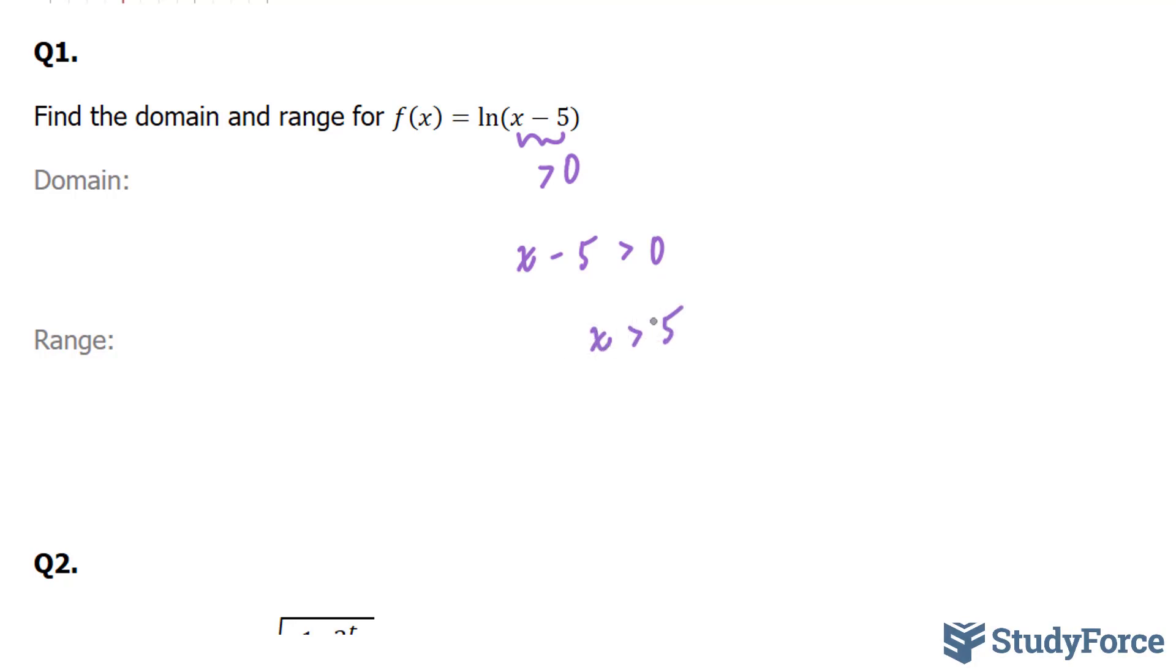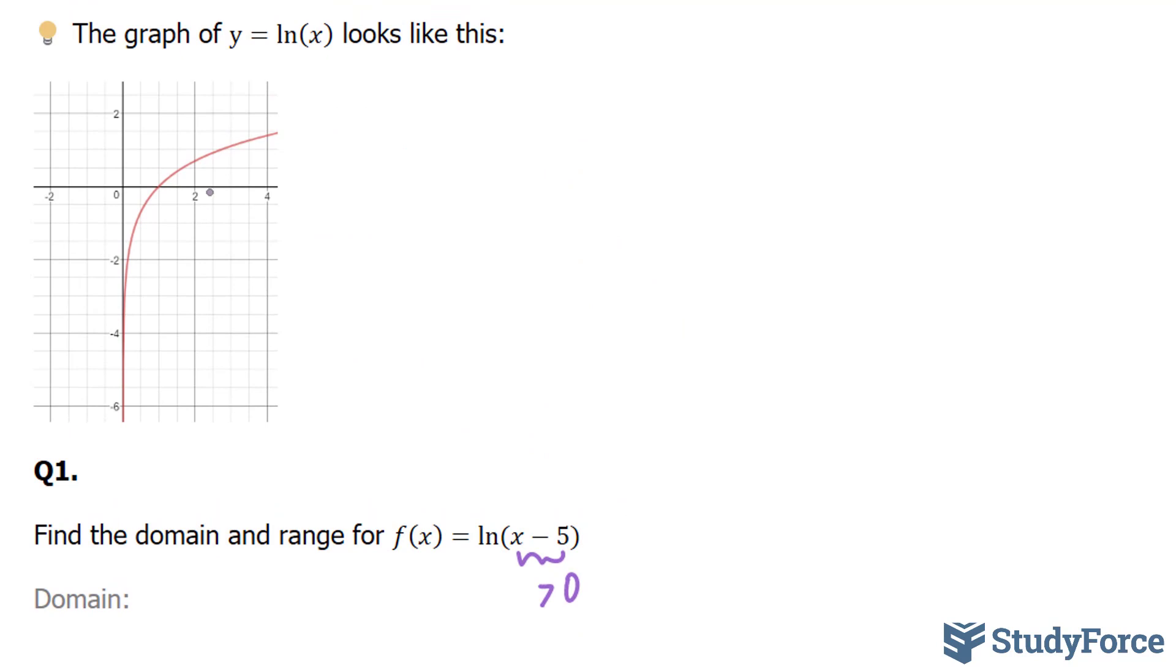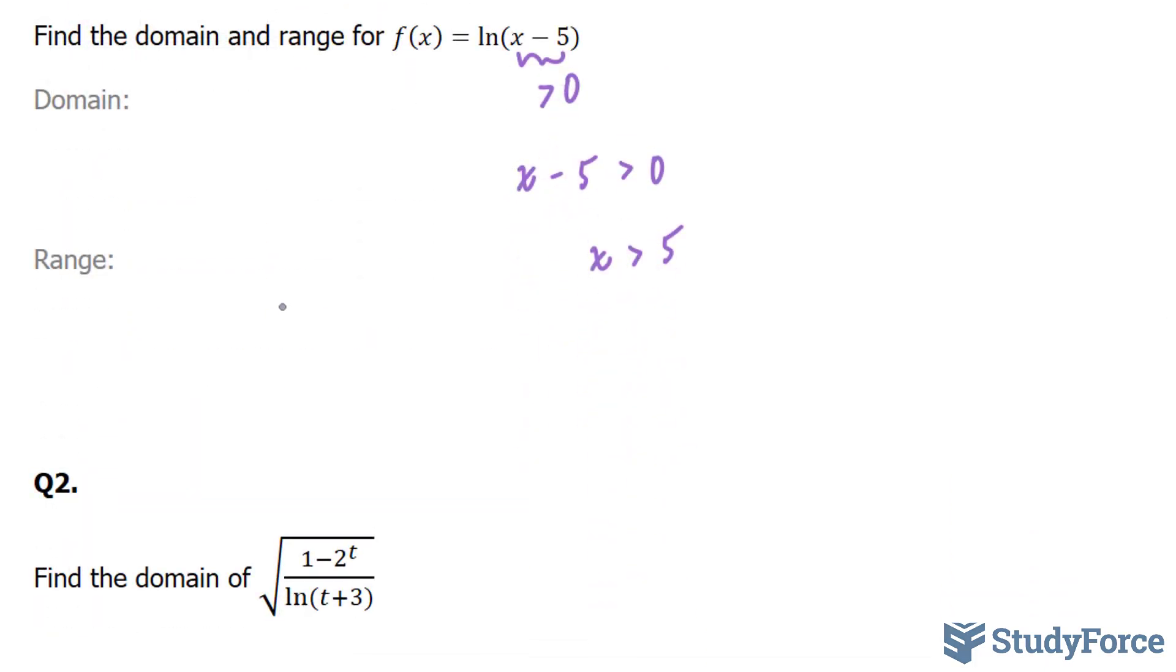Now to find the range, you have to ask yourself, what values can f(x) take on? If you take a look at the graph, you'll notice that this red line will continue to go down, and this part will continue to increase. That says that y can be any real value. The domain is x such that x must be greater than 5 for all real values of x.